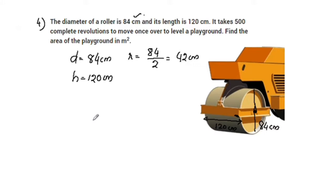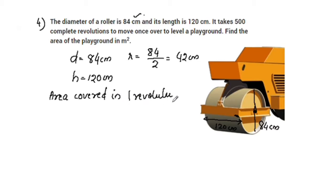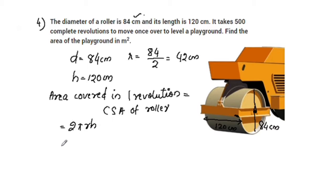Now let's get the answer. The area covered in one revolution equals the curved surface area of the roller. CSA of roller equals 2πrh. Substituting: 2 times (22/7) times r, where r equals 42, times h, where h is 120.